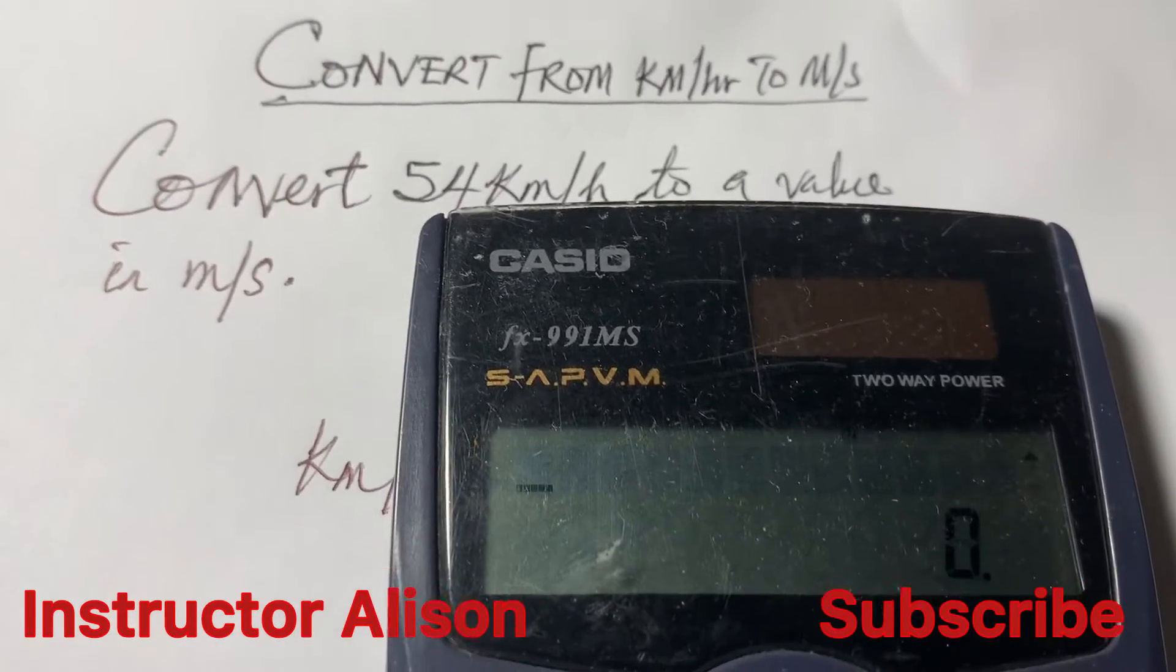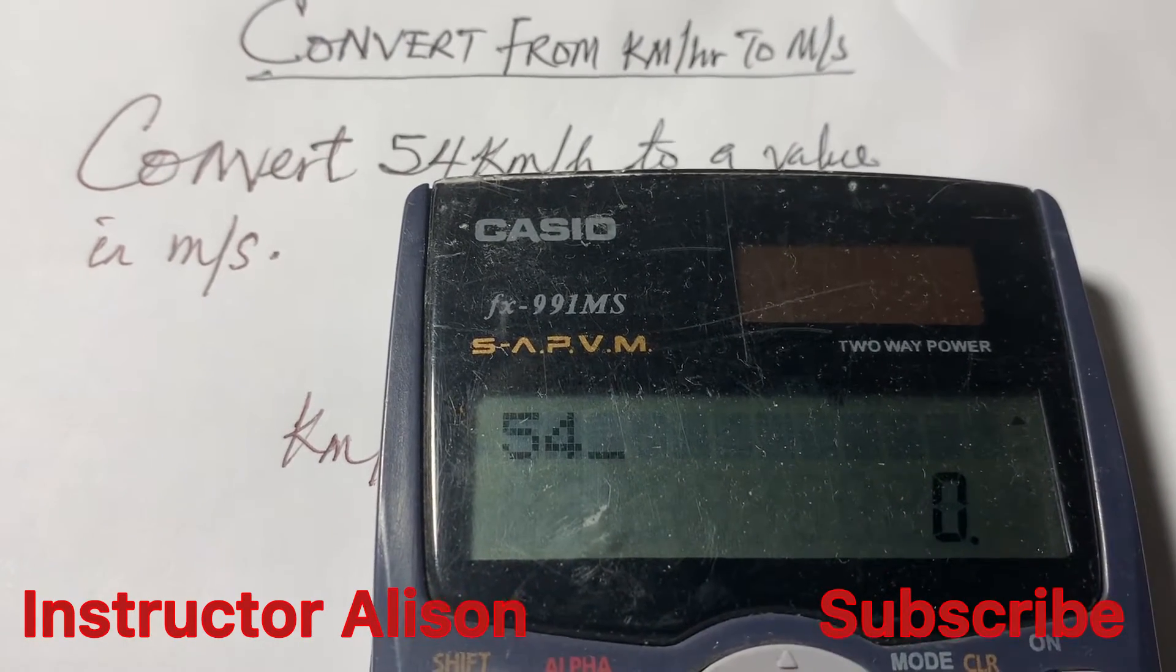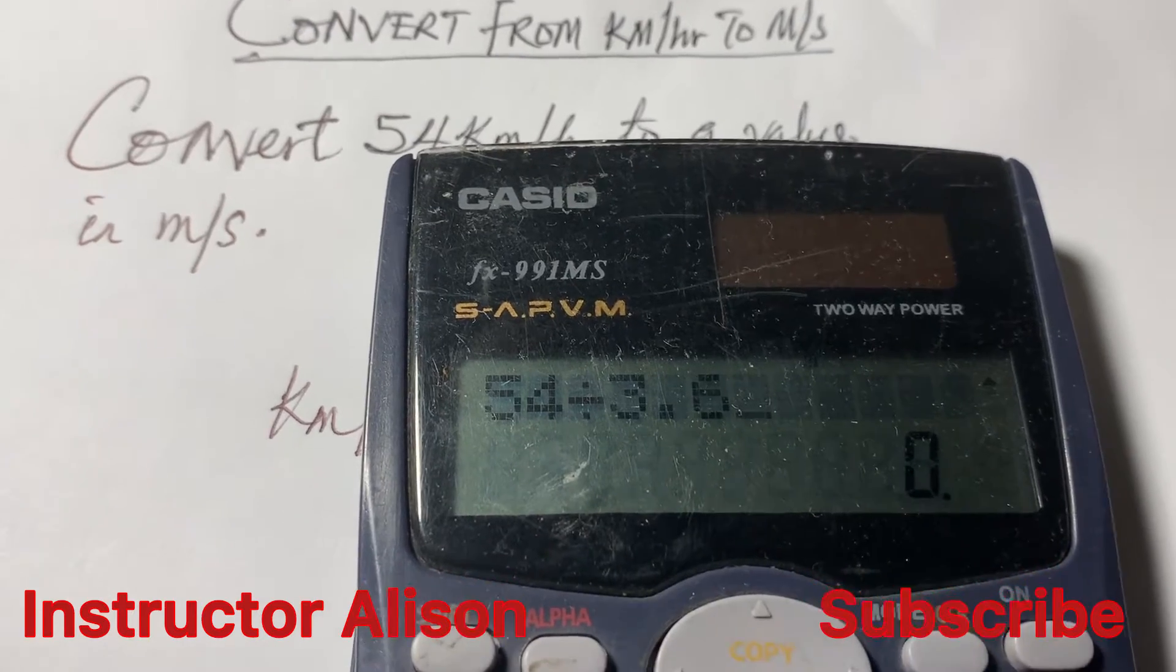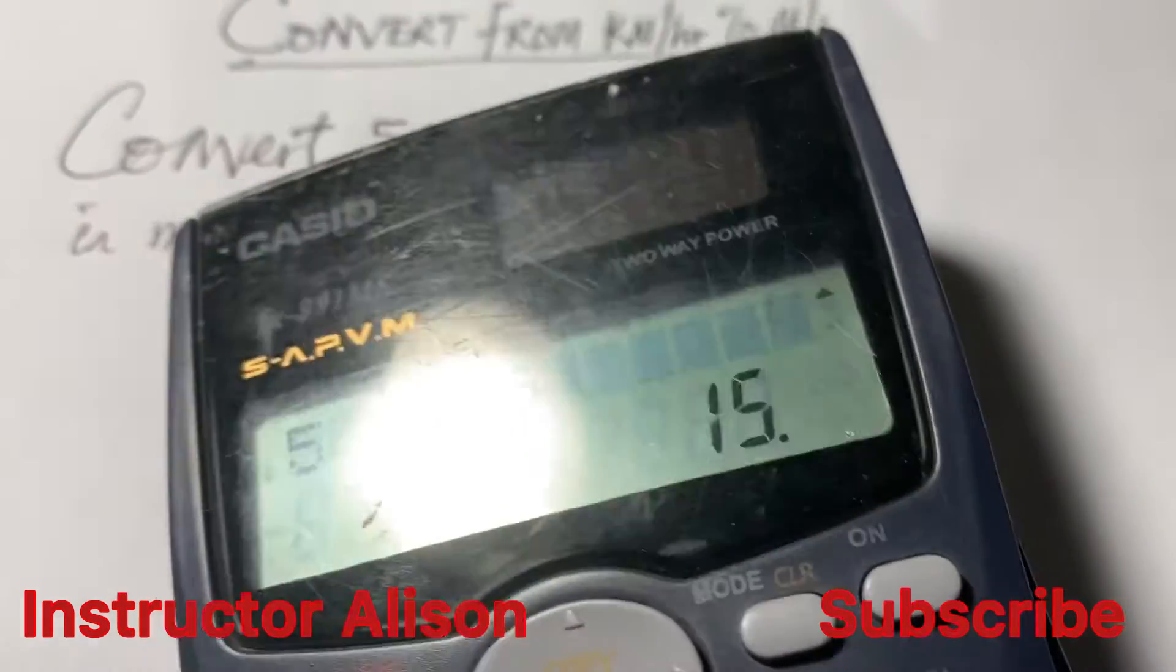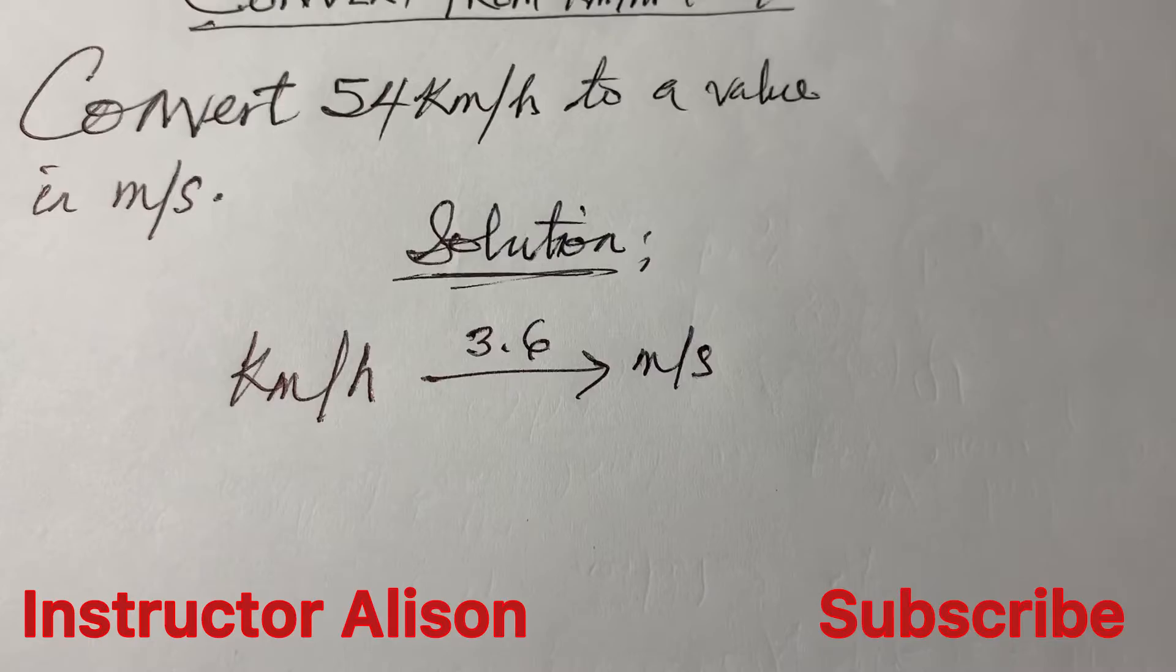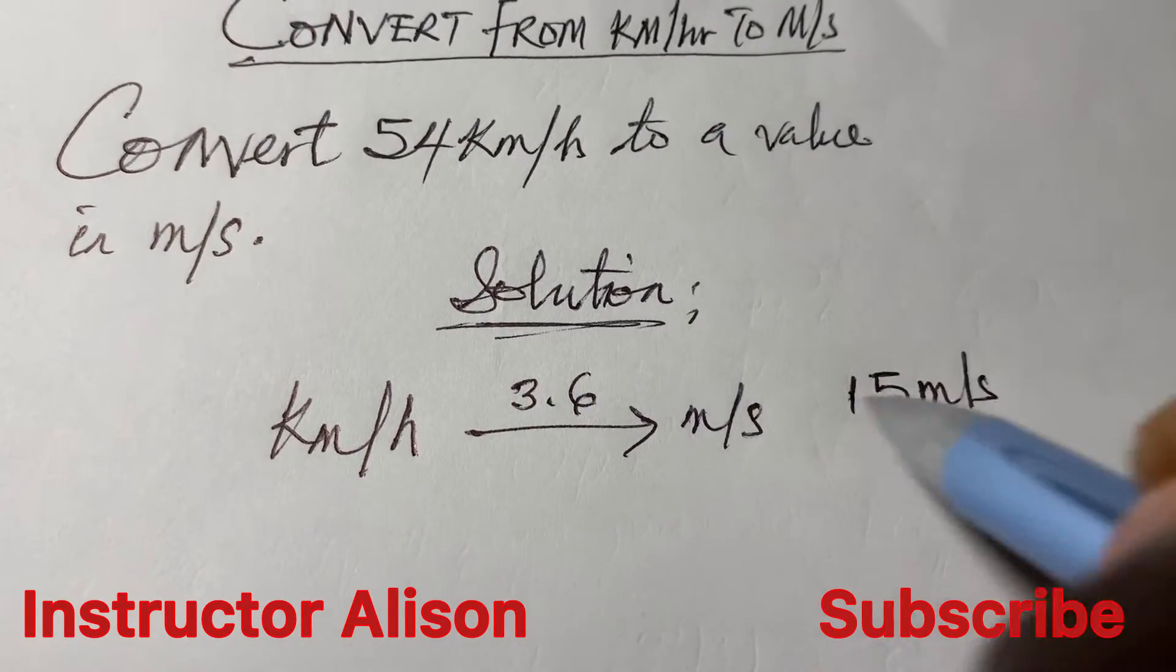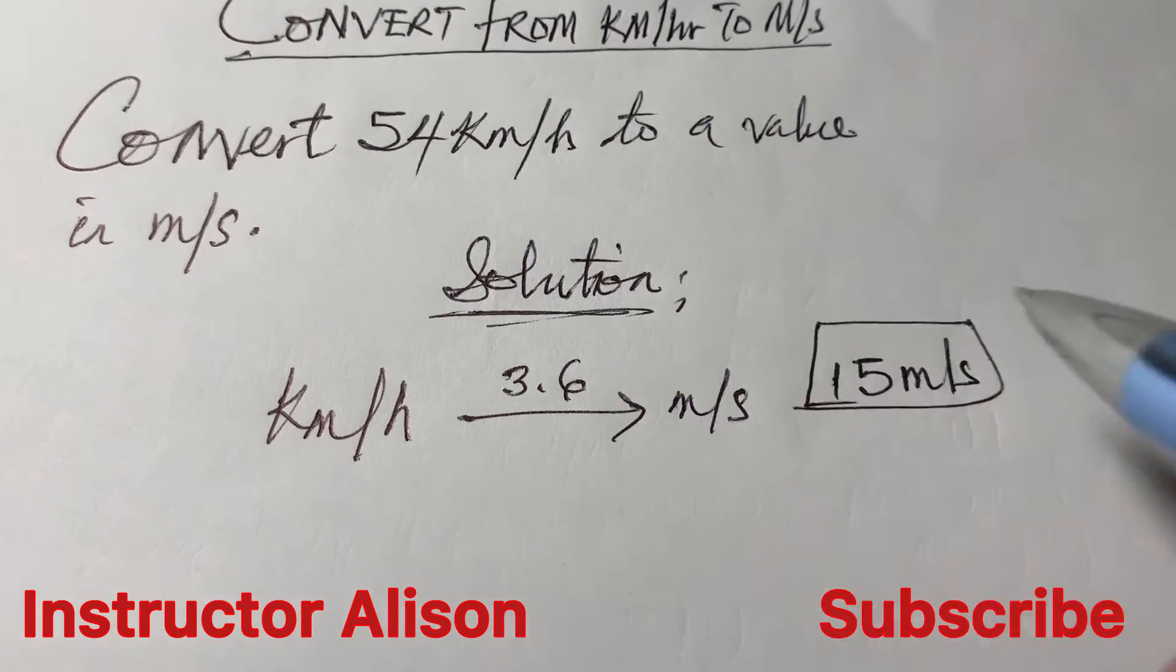So let's put that to work. If I have 54 kilometers per hour divided by 3.6, the result is 15. So the answer to this problem is just 15 meter per second. That is the short way or the quick way to do that.